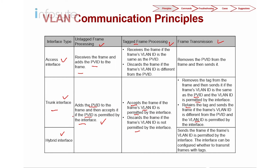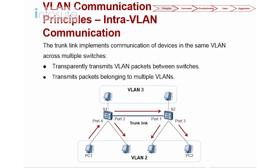For the hybrid interface, untagged and tagged ingress frames are processed the same way as on a trunk interface. The key difference is on egress: the hybrid interface can be configured to transmit frames either with a tag or without a tag, depending on the configuration. This flexibility is what distinguishes the hybrid interface from a trunk interface.